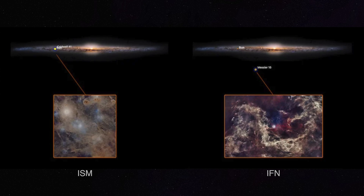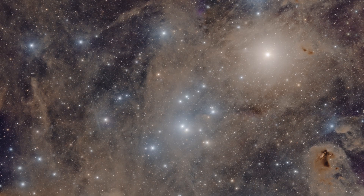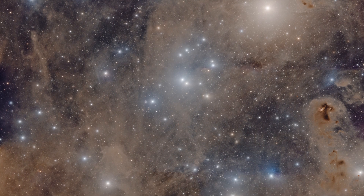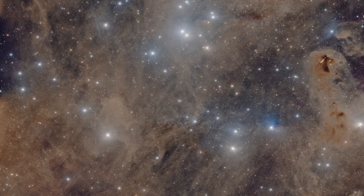Sometimes online you see an image with some dust and people call it IFN, when it's in fact ISM. ISM is interstellar medium — dust that is located within our Milky Way, illuminated by the stars nearby, very close to this dust. A good example of ISM is the Taurus molecular cloud complex, which is very close-by dust lit up by the stars around it. So it's not IFN even though it looks like it.